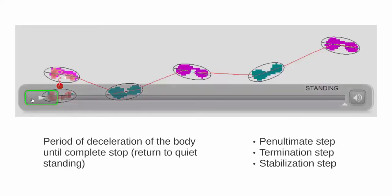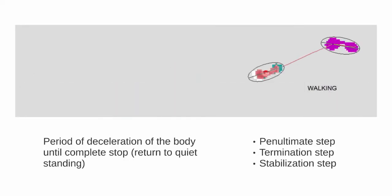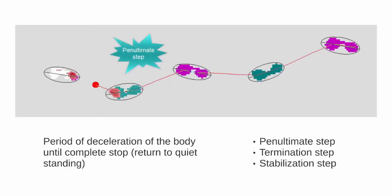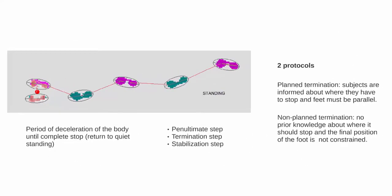Here we focus on the last three stances, which we will name penultimate support, last support, and stabilizing support. Two different types of protocols may be used in the literature. In planned termination, patients are informed about where they have to stop and they must end with their feet parallel. In the unplanned condition, the subject has no prior knowledge about where they should stop and the final position of the feet are not constrained.